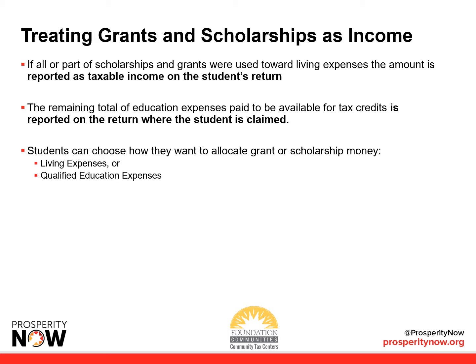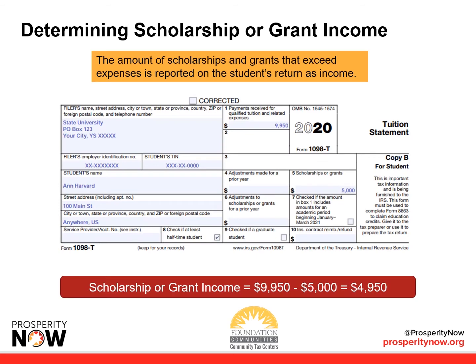Students can choose how they want to allocate grant or scholarship money toward either living expenses or qualified education expenses. The amount of scholarships and grants that exceed expenses is reported on the student's return as income. In this example, scholarship or grant income is $9,950 minus the eligible scholarships or grants, which then becomes $4,950.